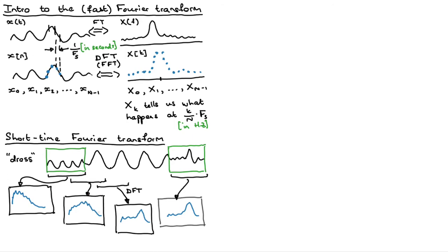If you have all these little photos of the DFTs as you go across the signal, you know what's happening in the word 'dress' at different time points. The first window captures the frequency content of the D in dress, and the last window tells you the frequency content of the S. With speech, we normally use a window that's 25 milliseconds long and a step size of 10 milliseconds — people have fiddled with those numbers for many years and that's basically what they came up with.